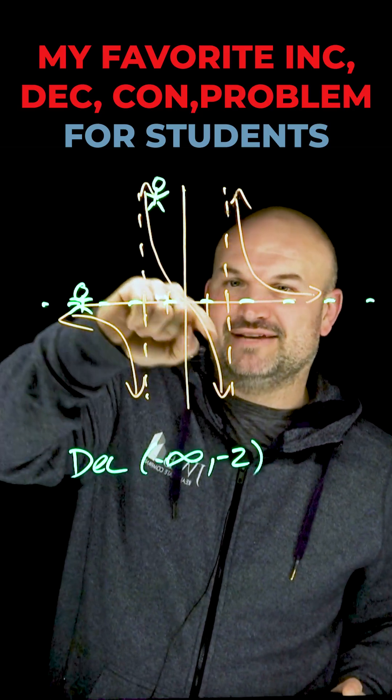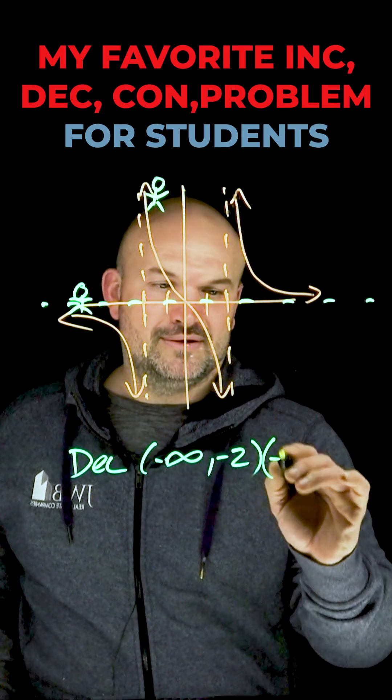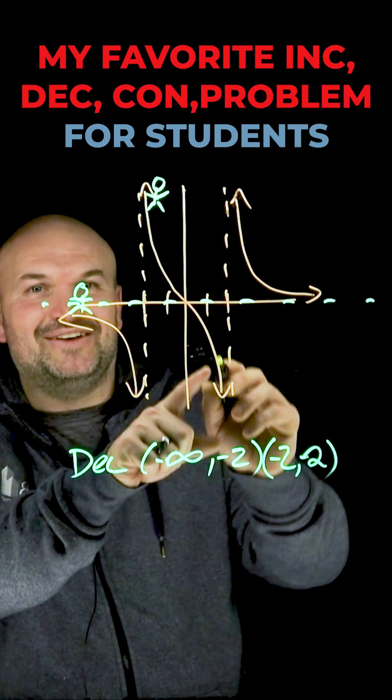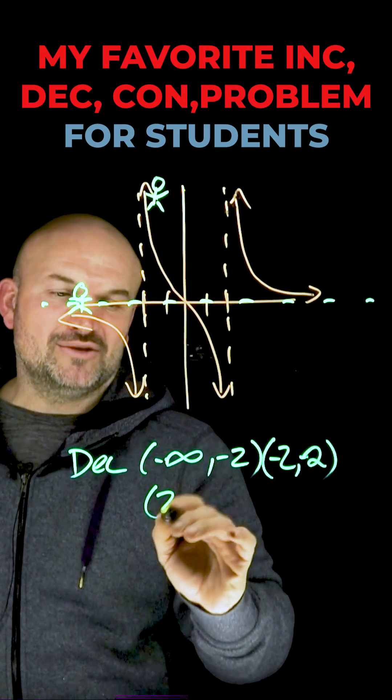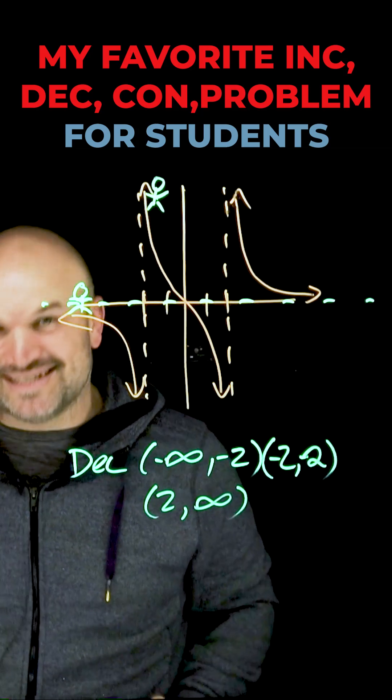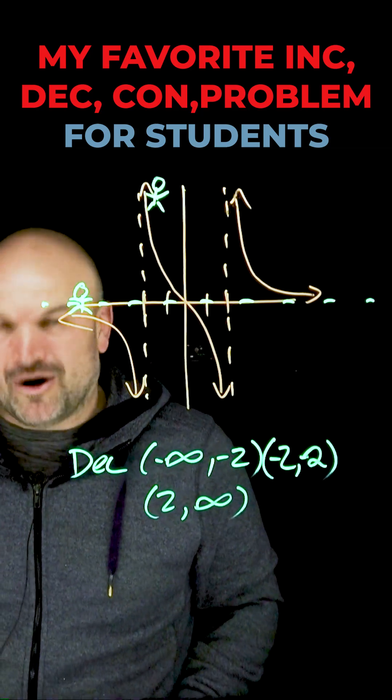Then we decline from negative two to positive two. And then again, we take the little elevator right back up here, and we decline again. So then that's going to be all the way from two to infinity. So this is an example of a graph that is always decreasing.